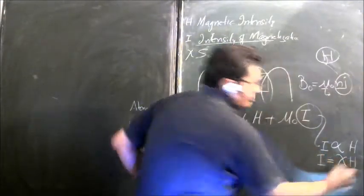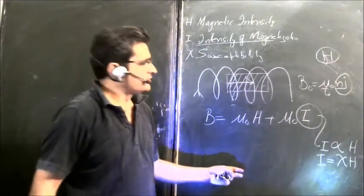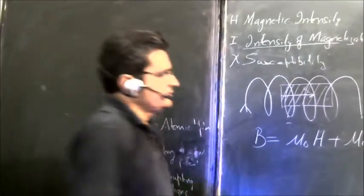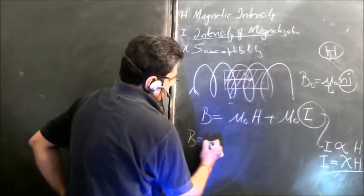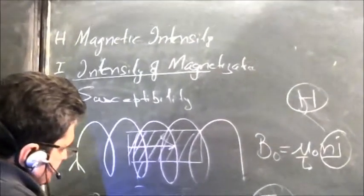Take mu_0 and magnetic intensity out. It becomes like this. This term is relative permeability.